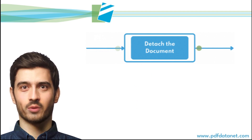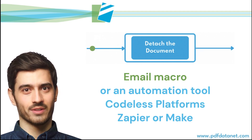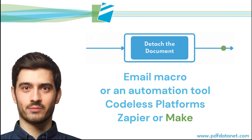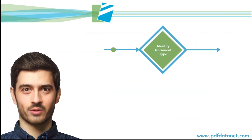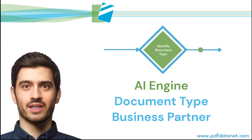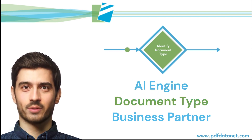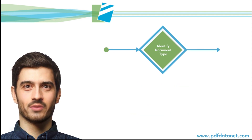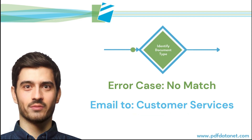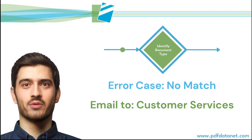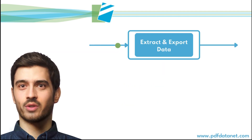To automatically detach the document, we use an email macro or business process app such as Codeless Platforms, Zapier, or Make. We then use our artificial intelligence engine to automatically identify both the document type and the business partner that sent the document. If the document recognition step doesn't find a match, the document is sent to customer services for review.